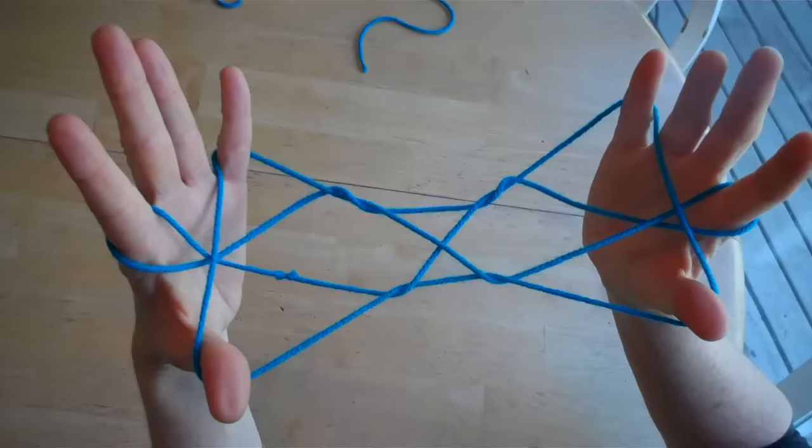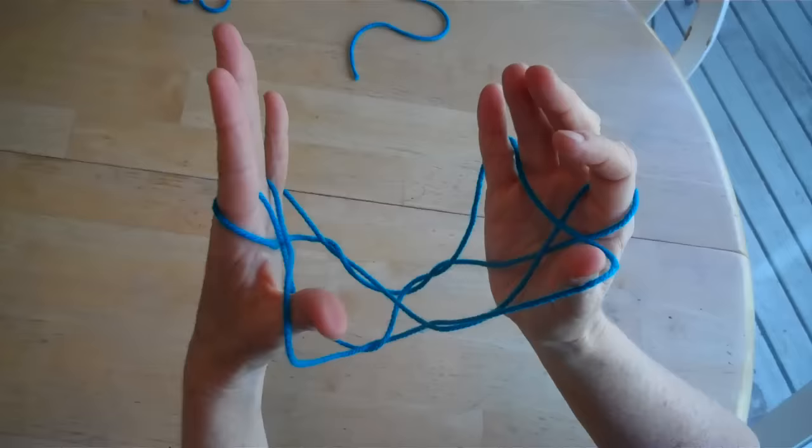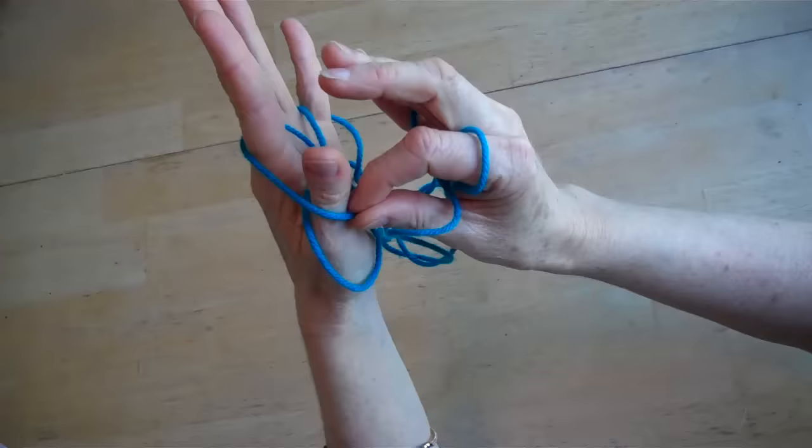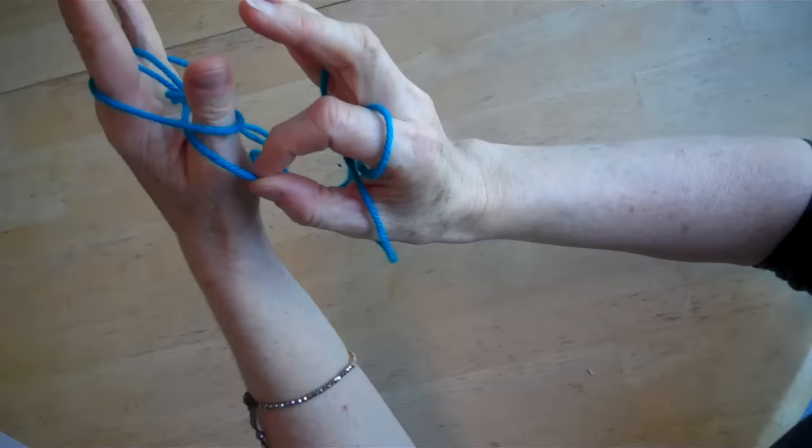The next part is tricky, so be sure to watch carefully. Using your right hand, lift the string from the outside of your left hand pointer finger and place it over the left thumb. Now you've got two strings over your thumb. Take the bottom string and lift it forward over your thumb.